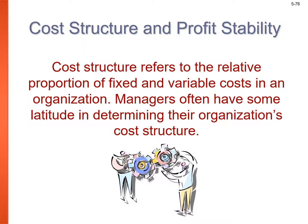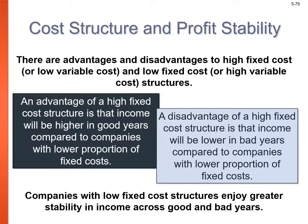Cost structure refers to the relative proportion of fixed and variable costs in an organization. Managers have latitude in determining cost structure. An advantage of high fixed costs is that income will be higher in good years compared to companies with lower fixed costs. A disadvantage is that income will be lower in bad years. Companies with low fixed cost structures enjoy greater stability in income across good and bad years.